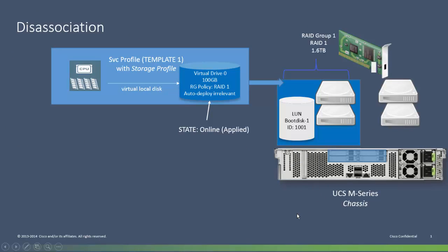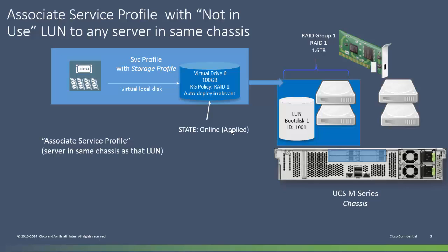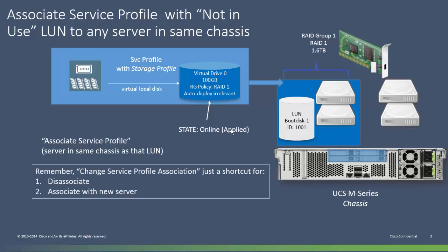What happens if I disassociate this service profile? The relationship between this service profile disk specification and the LUN in the chassis is maintained even though we're not associated with the server in that chassis. The state of the LUN specification is still online even though the configuration state is not in use. Because if I then associate this service profile with any server in the same chassis, nothing happens to that association — the configuration just becomes online and the content of that LUN is preserved, unless you had a scrub policy. Notice that a change service profile association is exactly a disassociate followed by an associate, so the intermediate state just goes by pretty fast.